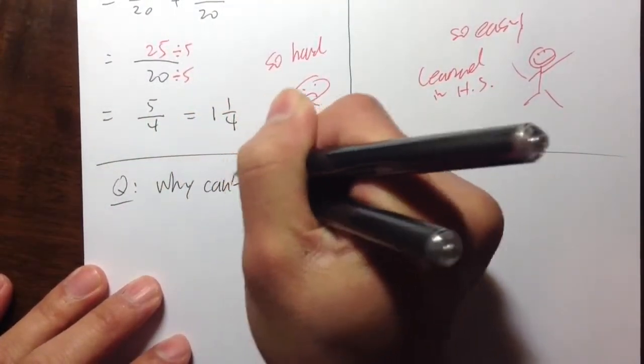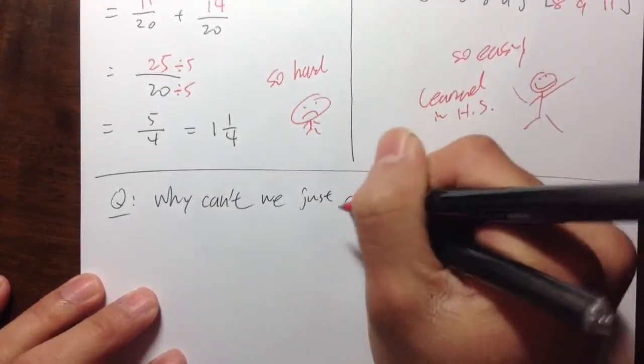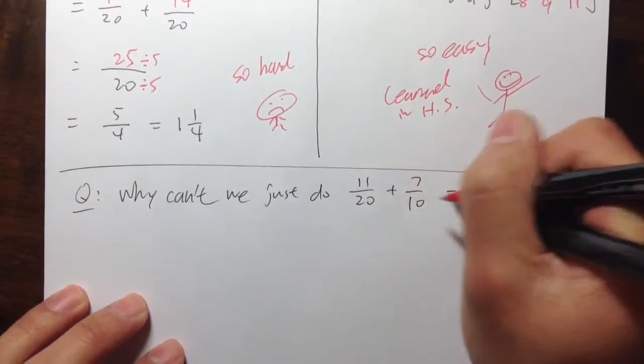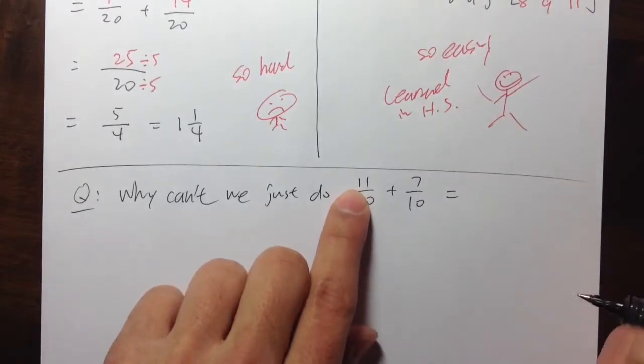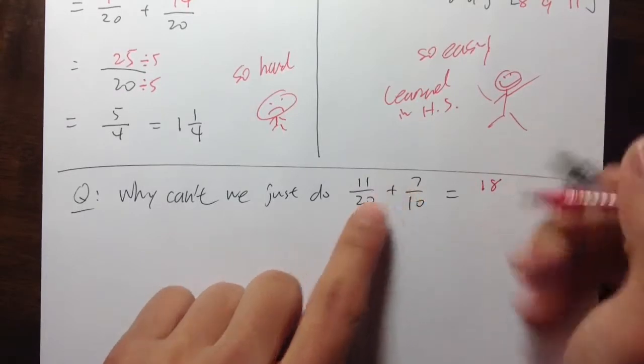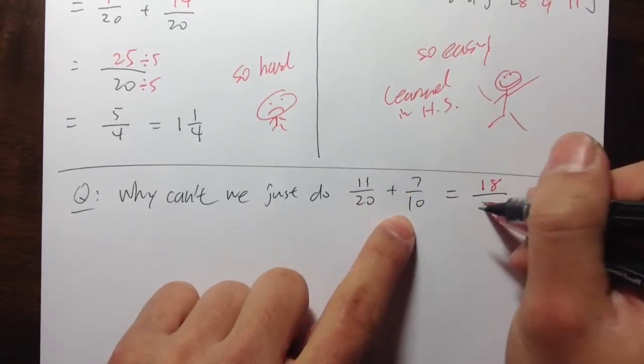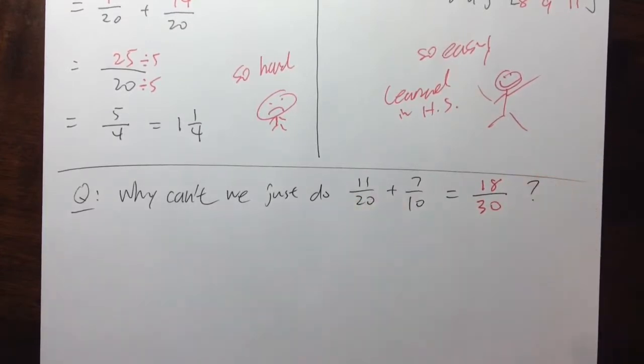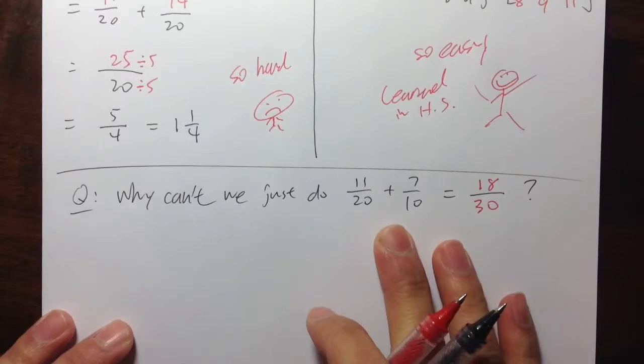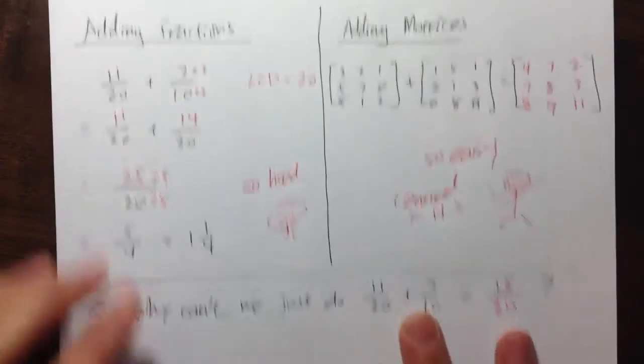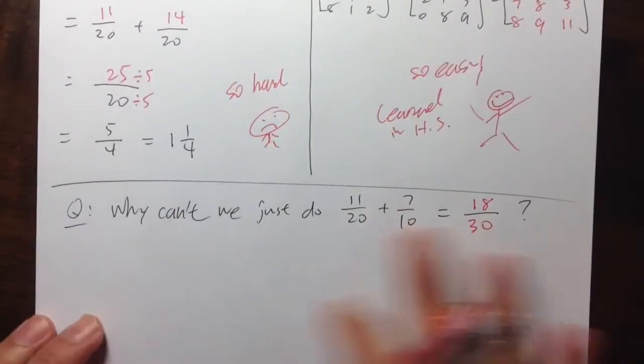Why can't we just do... So let me take this for example again. So if you have 11 over 20, I want to add it with 7 over 10. Why can't we just say, okay, let's look at the top and top. 11 plus 7 is equal to 18. And then over 20 plus 10 is equal to 30. Well, why can't I just do that? And if you have done this on your test before, you will always be marked wrong. I don't know why that this is not the case when we are talking about fractions.